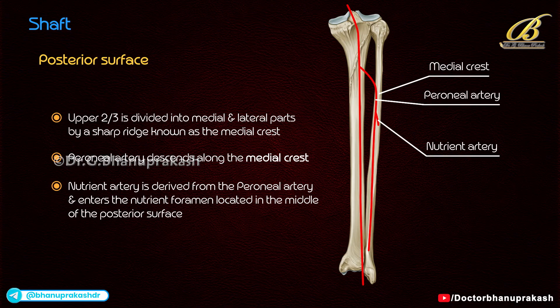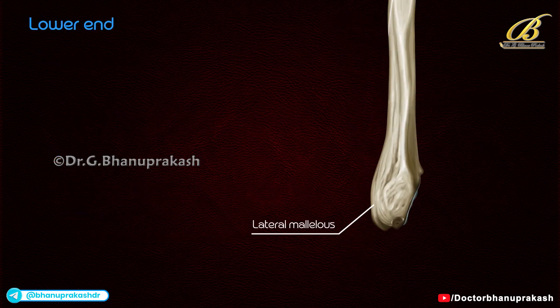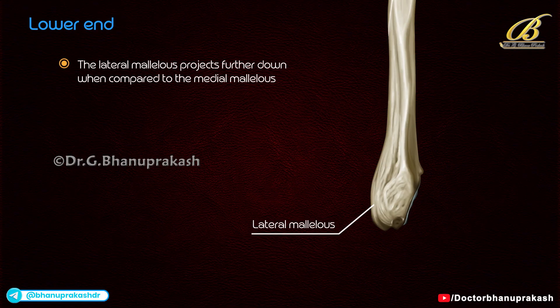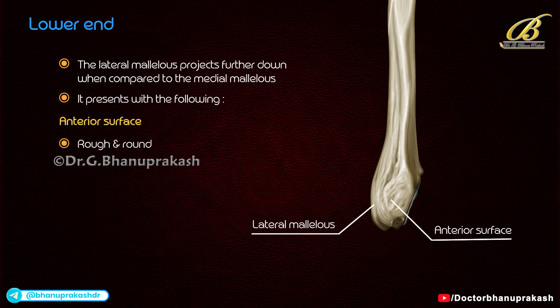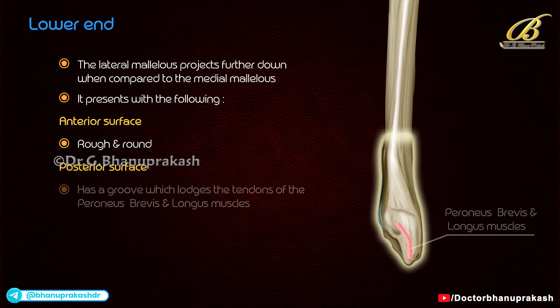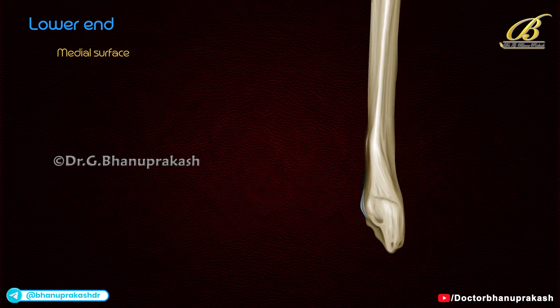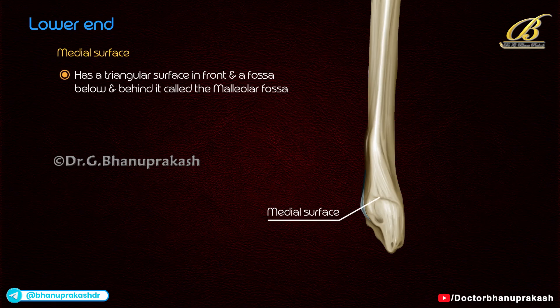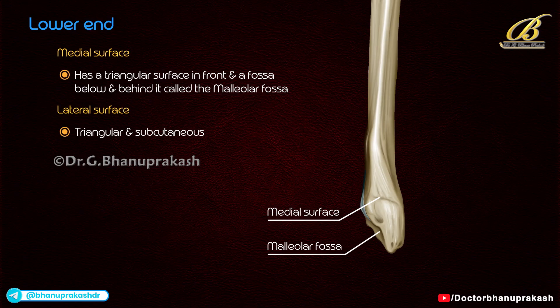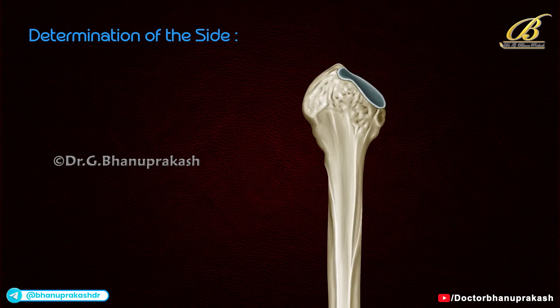The nutrient artery is derived from the peroneal artery and enters the nutrient foramen located in the middle of the posterior surface; the nutrient canal is directed downwards. The lower end forms the lateral malleolus, which projects further down compared to the medial malleolus. It presents with an anterior surface which is rough and round, a posterior surface which has a groove lodging the tendons of peroneus brevis and longus muscles, and a medial surface which has a triangular facet in the front and a fossa — the malleolar fossa — below and behind it.